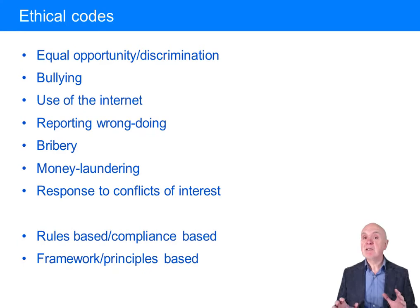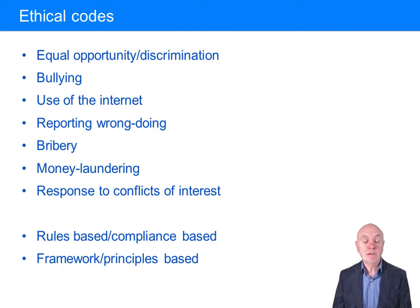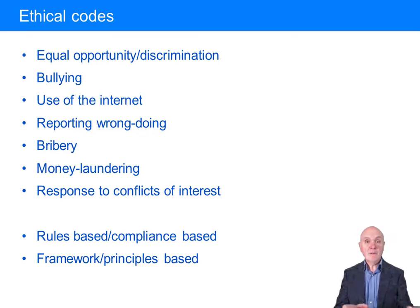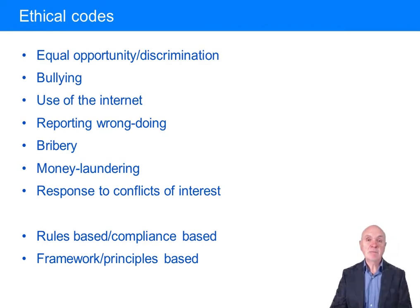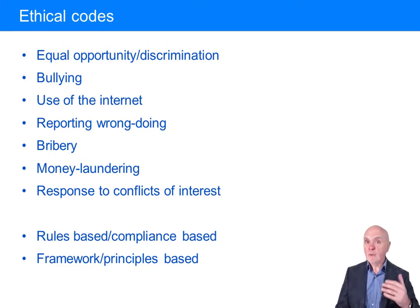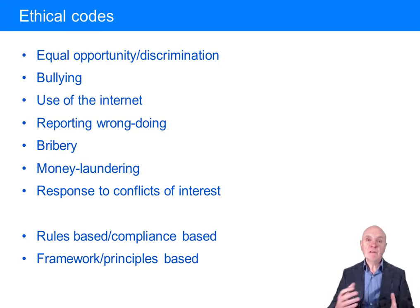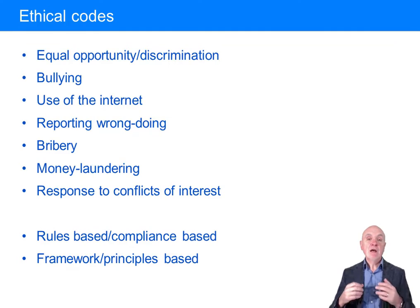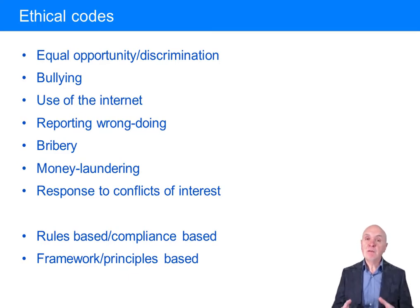The sorts of areas covered by typical ethical codes — and there's one in your notes setting out Amazon's ethical code — include equal opportunity and discrimination. So as a manager with two employees to promote to supervisor, the only consideration should be who will be better at the job — it shouldn't be discriminatory based on gender, race, religion, and so on. All employees, potential recruits, customers, and suppliers should have equal opportunities.